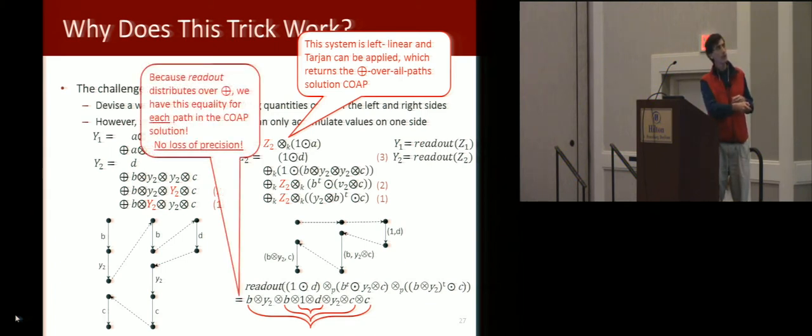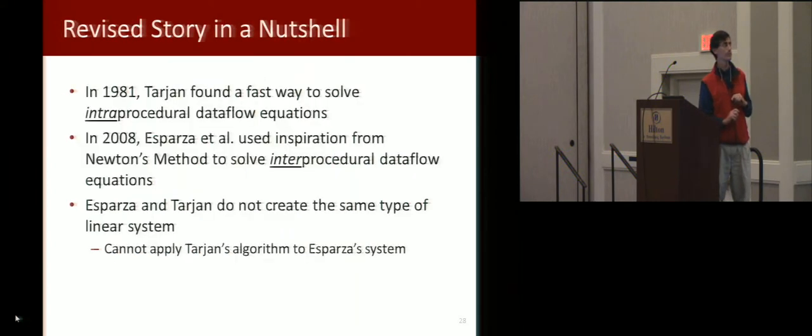But here, because readout distributes over plus, when we put together this kind of stuff for multiple paths, the readout distributes over it, and we get the exact value with the mirrored symmetry that we want for every one of the paths. But the value that we get out is the desired value with no loss of precision.